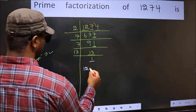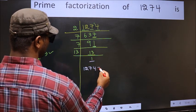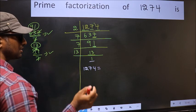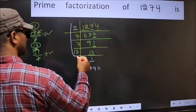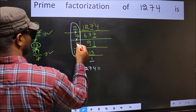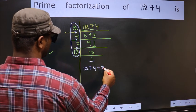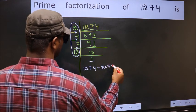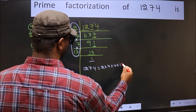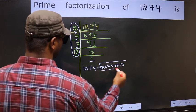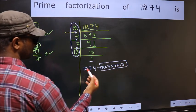So the prime factorization of 1274 is the product of these numbers. That is 2 into 7 into 7 into 13. This is the prime factorization of 1274.